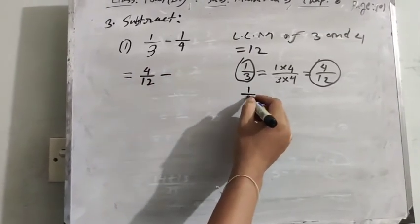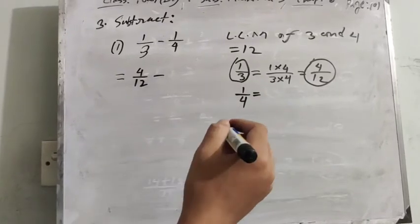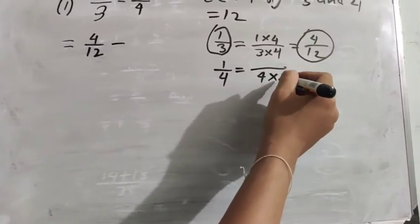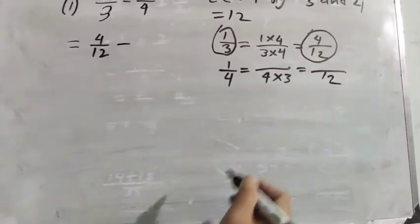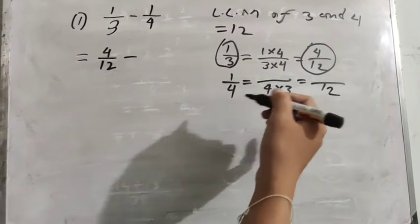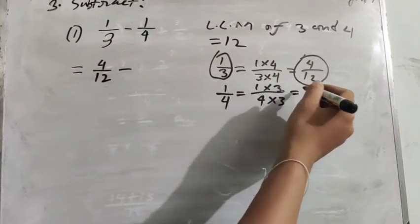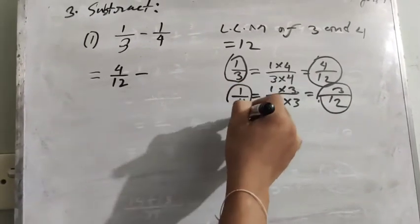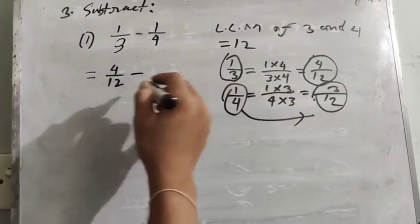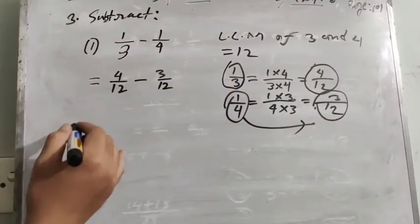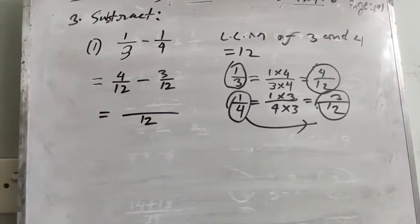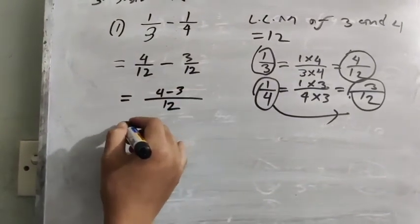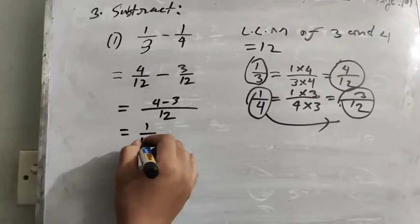Again, the second fraction is 1/4. The denominator 4 multiplied by 3 equals 12, and 1 multiplied by 3 equals 3. So 3/12 is the equivalent fraction of 1/4. We can write 3/12. The LCM is 12. So 4 minus 3 equals 1. The answer is 1/12.